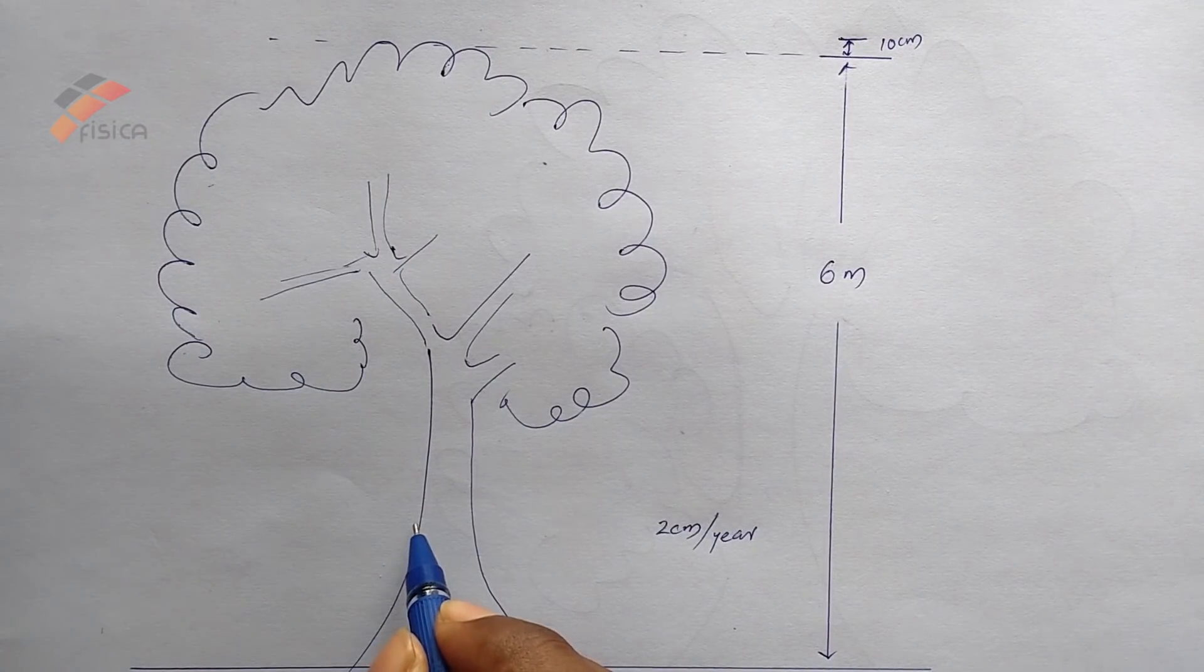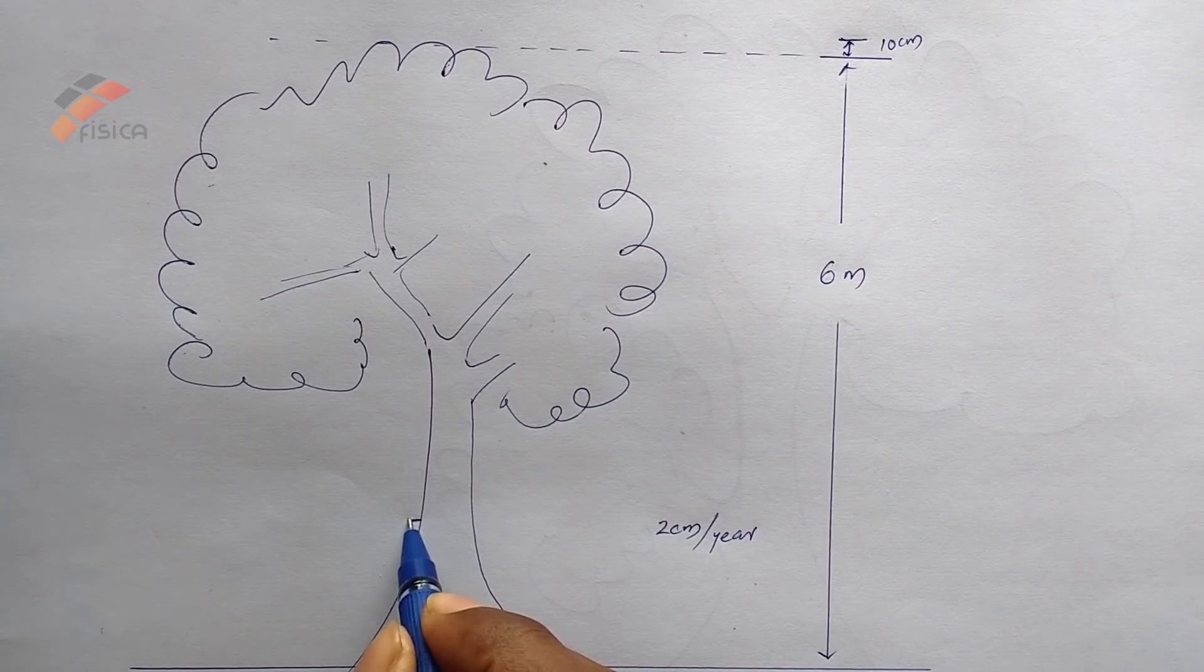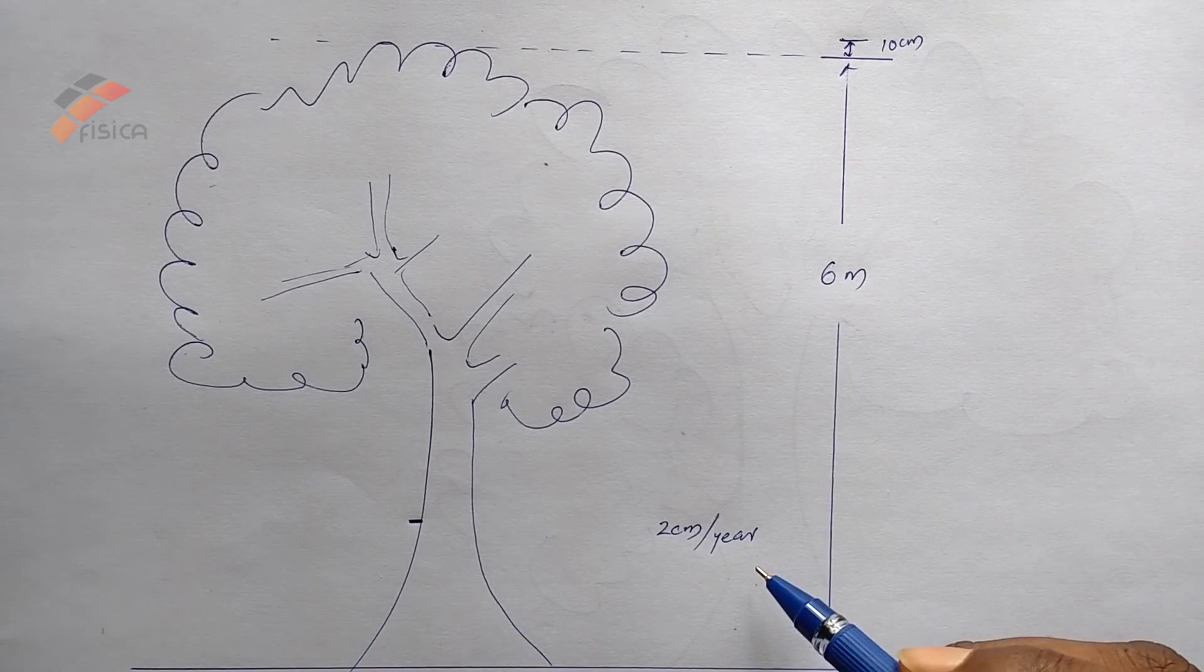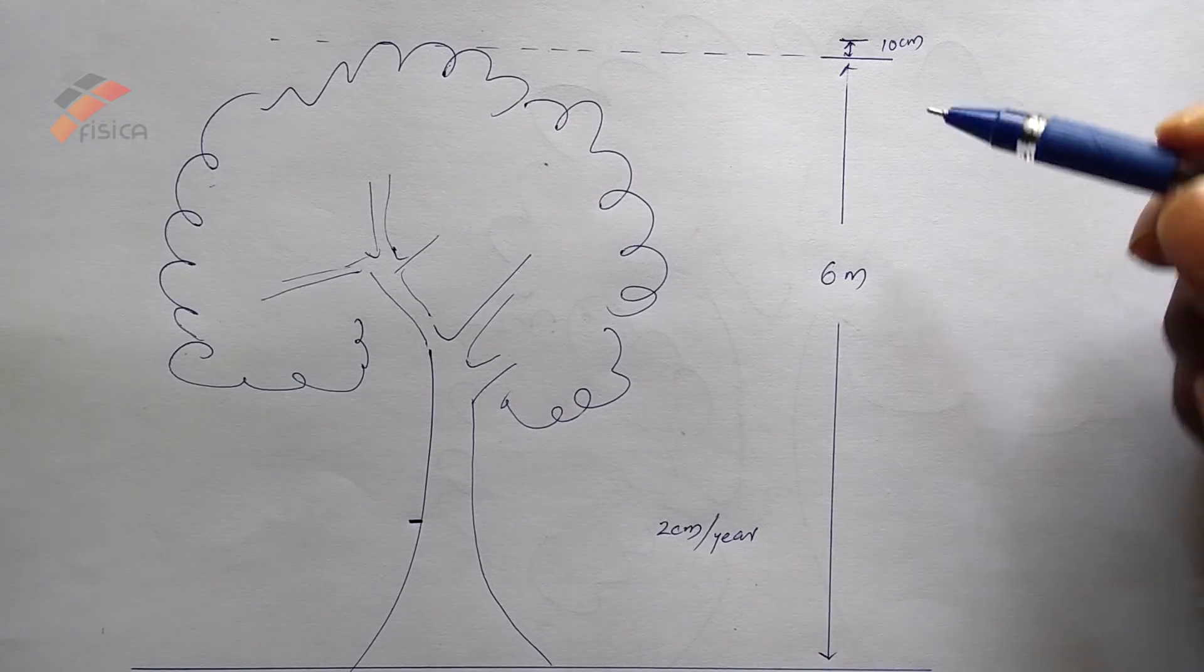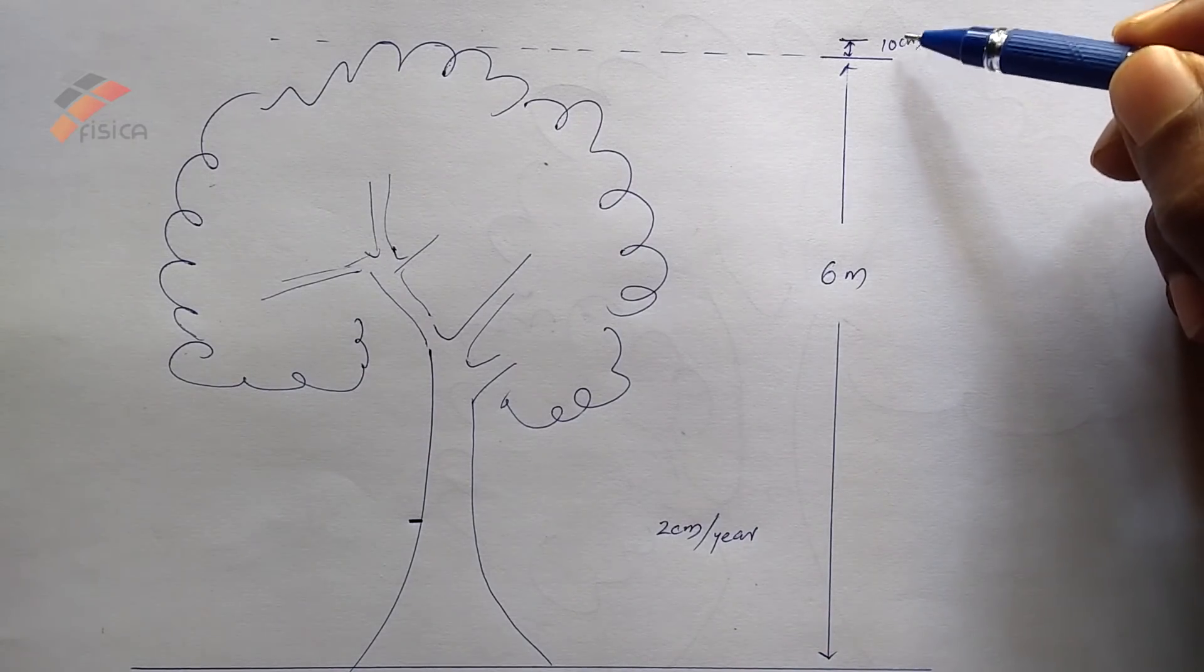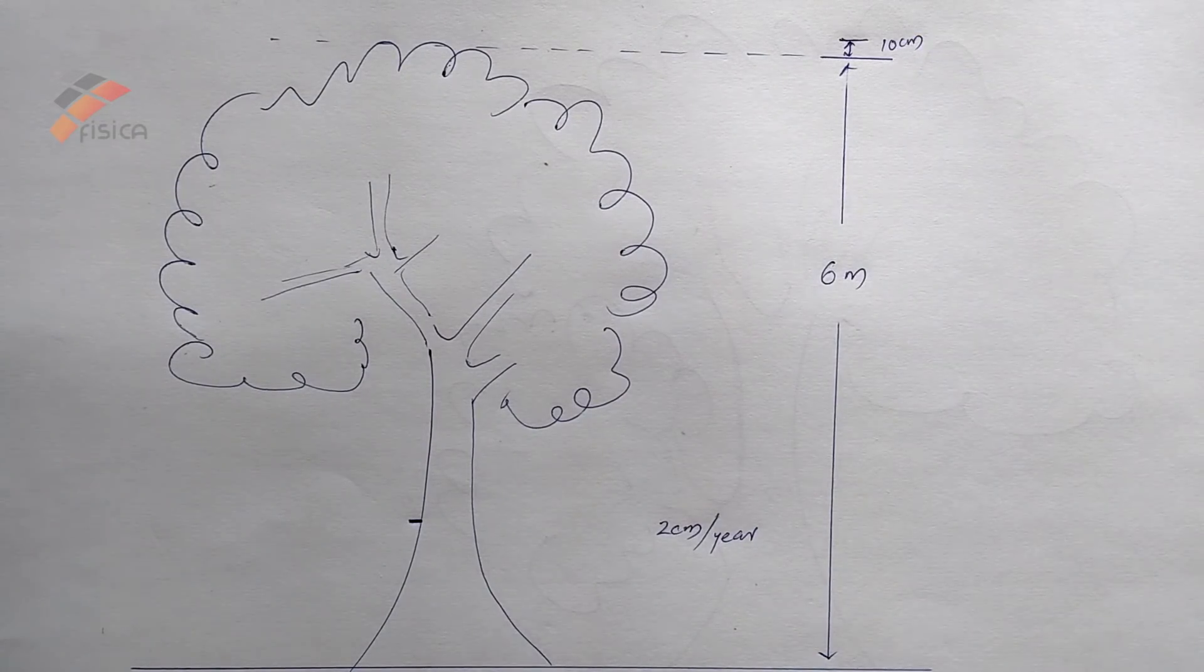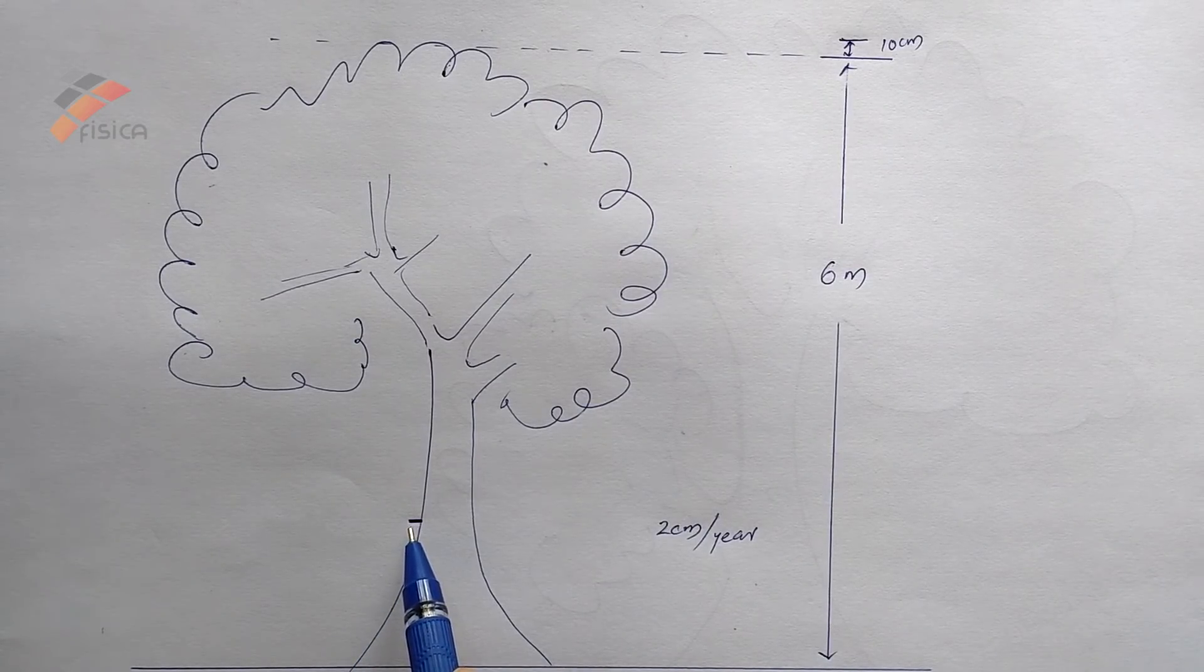So if this is the nail, the position of nail, even after the five years, the increase in the height is very few. So the increase in the height of nail is almost zero.